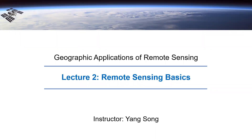This is lecture two of Geographic Applications of Remote Sensing, and we're going to talk about remote sensing basics. This is actually the first chapter of the course, because lecture one was about the introduction of the course. Today you can consider this as remote sensing class 101 — remote sensing basics.